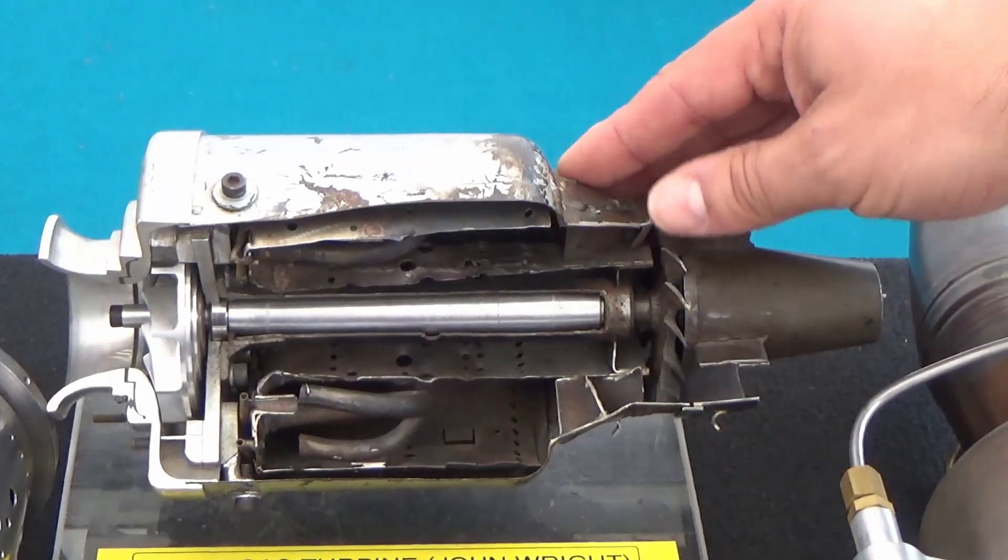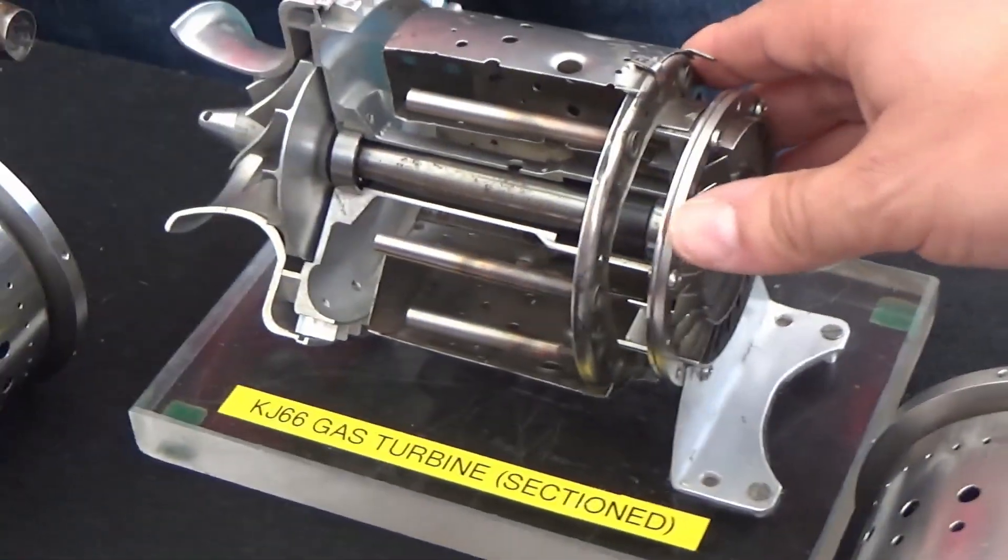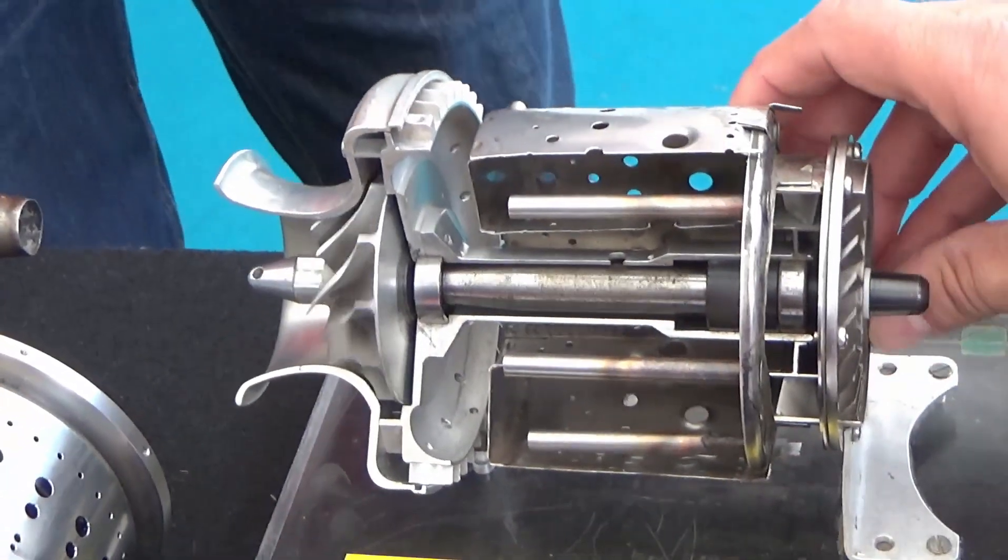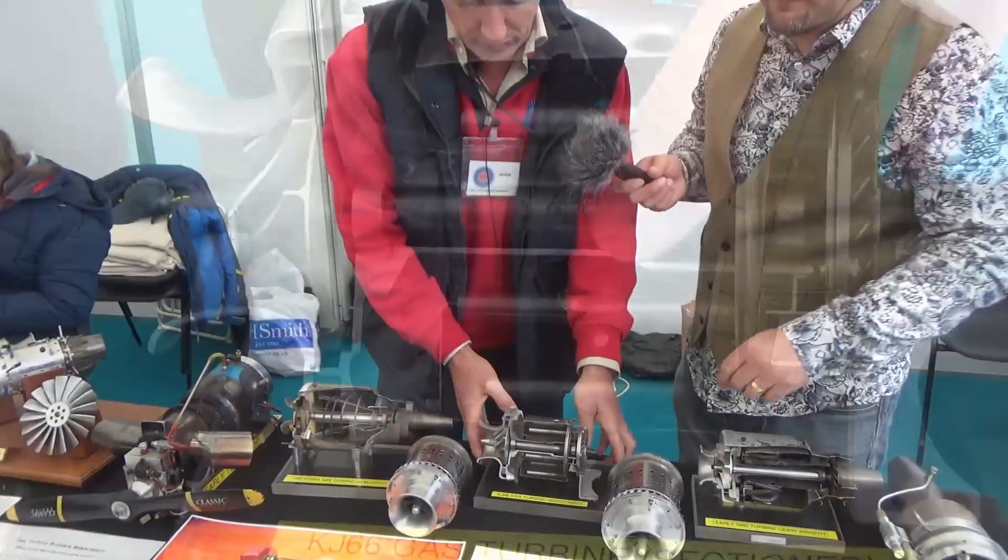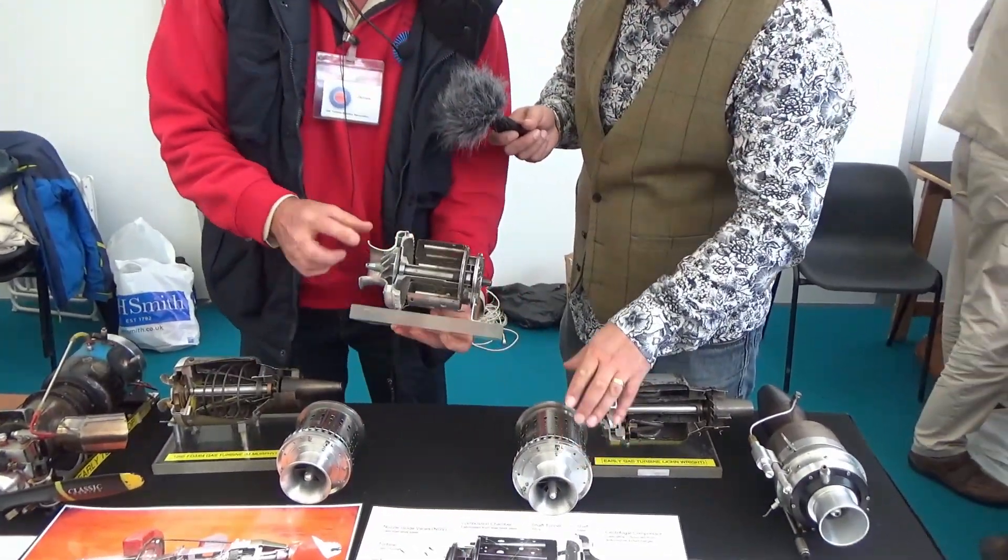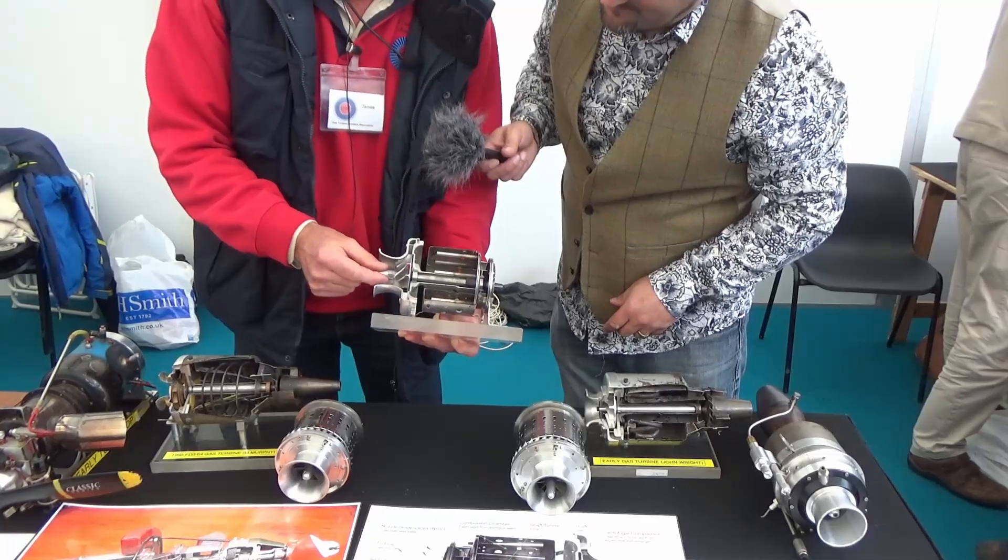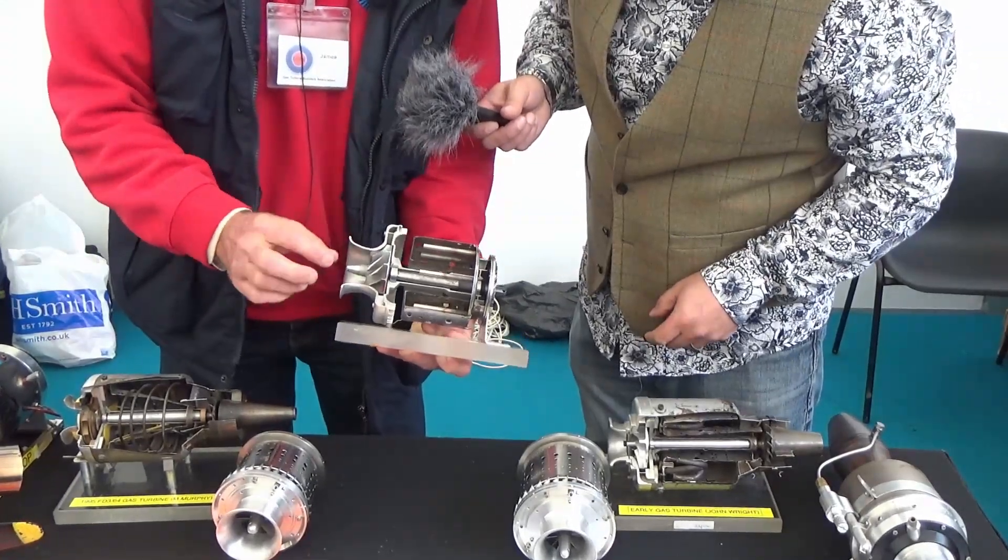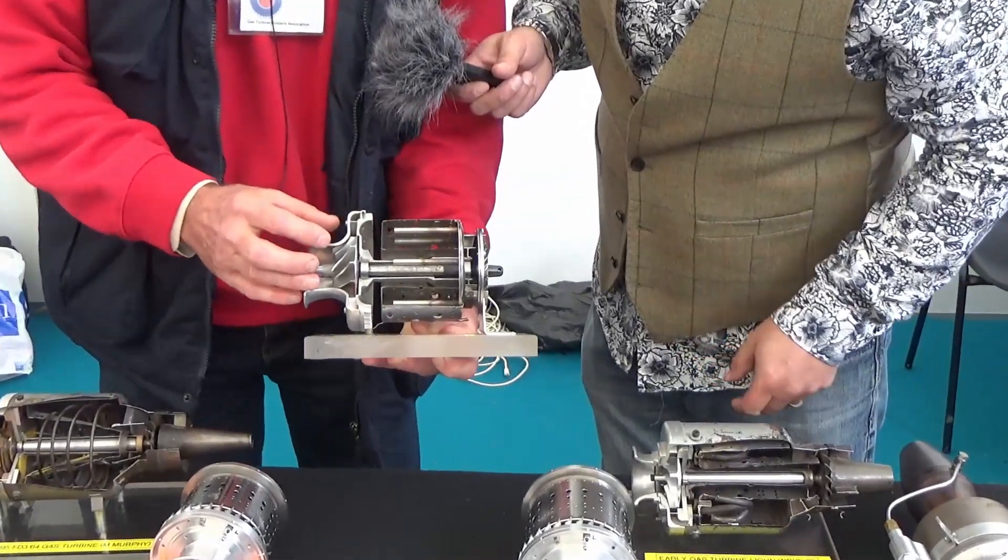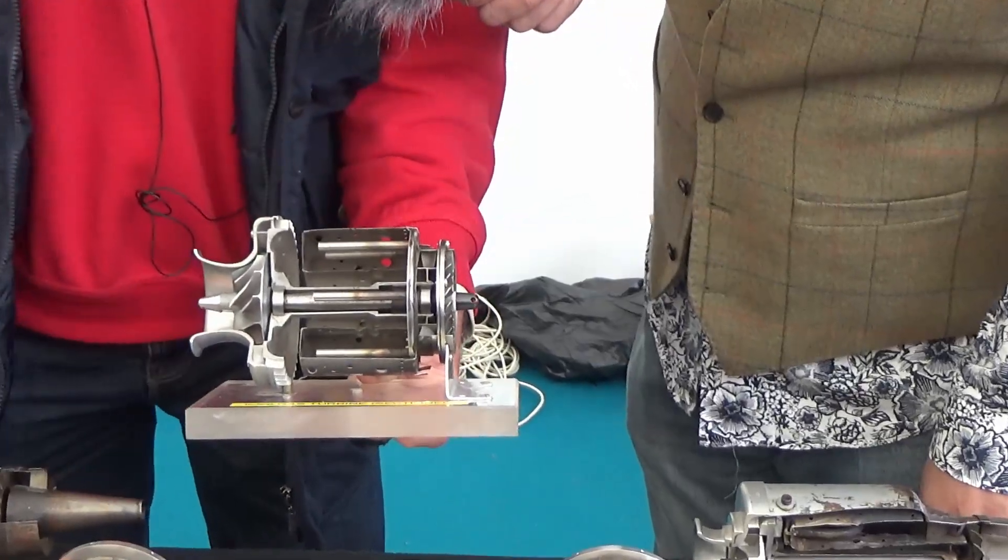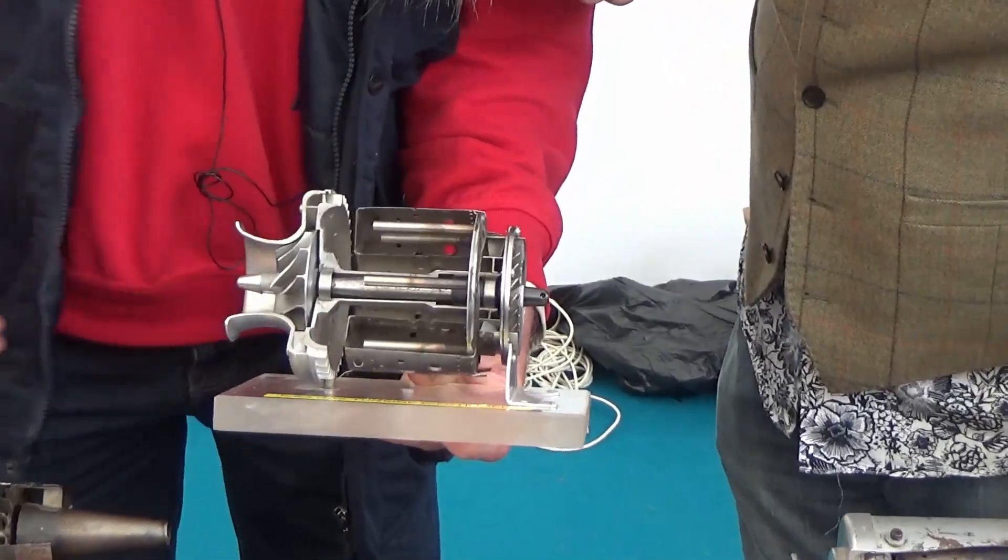And as time went by, the availability of turbochargers on cars and trucks meant that we were able to get hold of turbocharger compressors, which you can now see has much more complicated vanes. They're much thinner and we can move much, much more air more efficiently than we could on either of the homemade versions earlier.